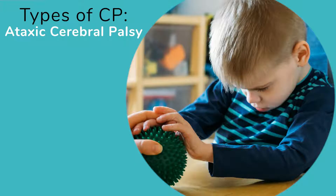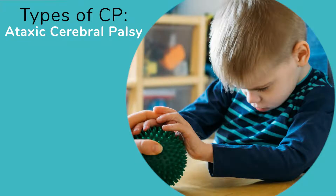Ataxic cerebral palsy causes problems with balance and coordination due to damage of the brain's motor control centers. An individual with ataxic CP may have a challenging time with either fast movements or movements that require a lot of control, like riding. It can also make them unsteady while walking, and they may find it difficult to control their arms or hands when trying to reach for something.